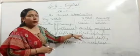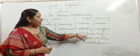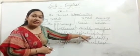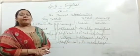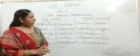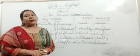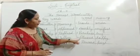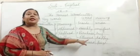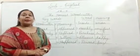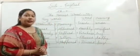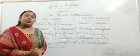Number three: P-U-R-C-H-A-S-E — Purchase. Purchase means buy — kharidna. Number four: P-L-E-A-S-E-D — Pleased. Pleased means happy — khush hona.